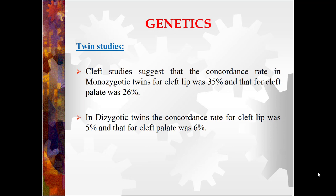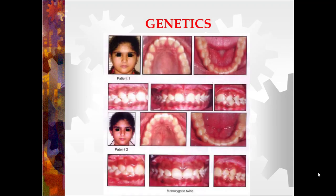Cleft studies suggest that the concordance rate in monozygotic twins for cleft lip was 35% and for cleft palate was 26%. This reflects the heritability of the condition — the higher the monozygotic concordance, the more important is the genetic contribution. As an example of monozygotic twins: comparing the maxillary arch of two kids, there is spacing between incisors in the first but mild crowding in the second; however, deep bite is present in both, and occlusion is almost identical — demonstrating how monozygotic twins have very similar occlusion.